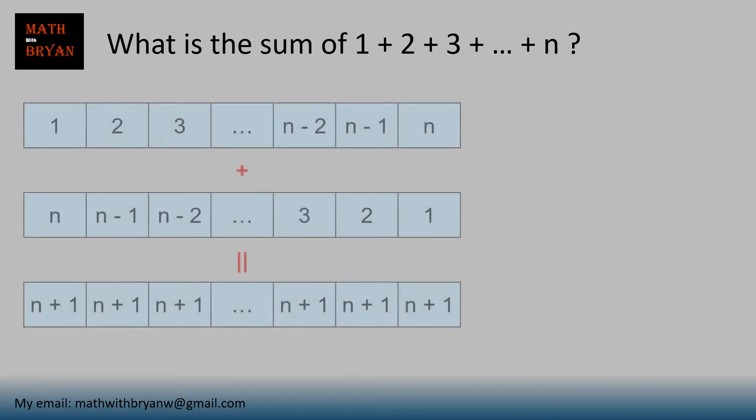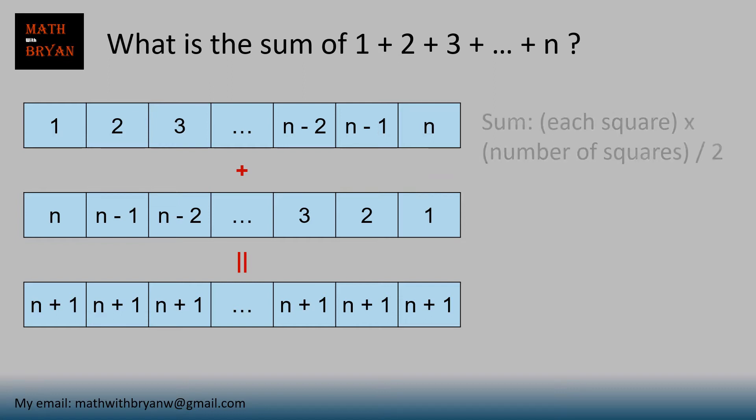To find the sum, you get two sets of these numbers, but one set is swapped. You add them together, and notice that each column adds up to n plus 1. So, to find the sum of one set, you take the number on each square on the bottom, multiply that with the number of squares, and then divide by 2. Simplify, and you'll get n times n plus 1 divided by 2.